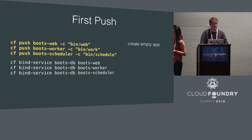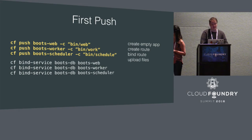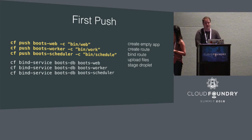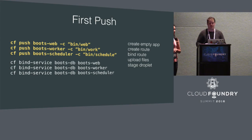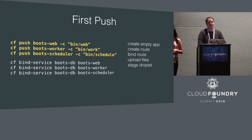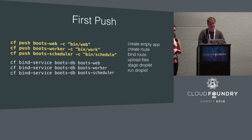If we look at what's going on under the covers, the push is more complicated than just a CF push. The CLI is orchestrating a bunch of different API commands to get our app up and running. First we create an empty app with all the metadata — things like CPU, instances, memory. We create a route and bind it to the app, then upload the files. Then comes staging the droplet — once we've uploaded the source code, we compile it, bring in dependencies, and build the droplet, which is the runnable zip file sent to Diego. Staging an app takes a very long time compared to the rest of the steps.